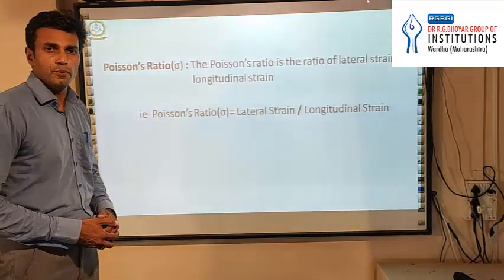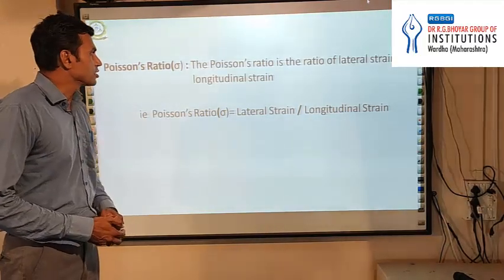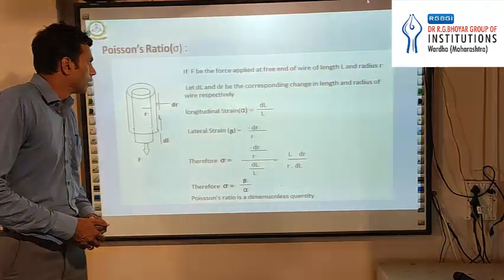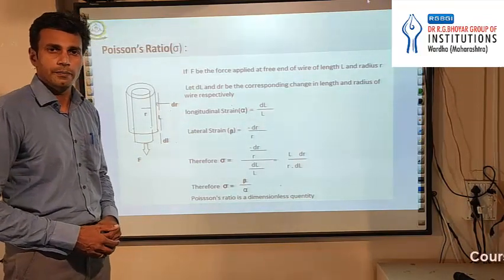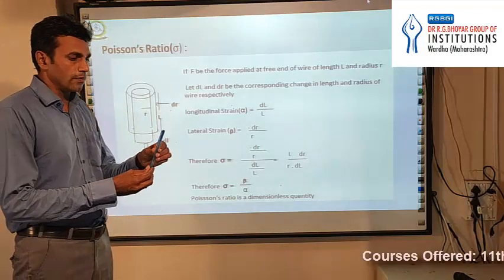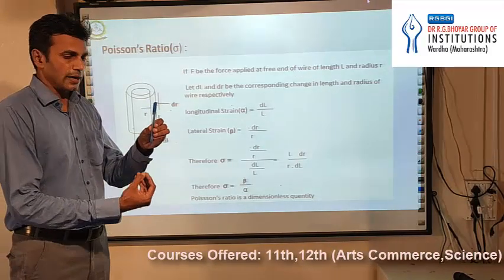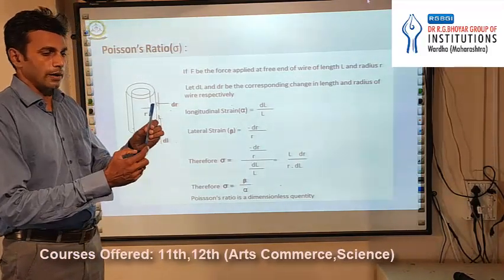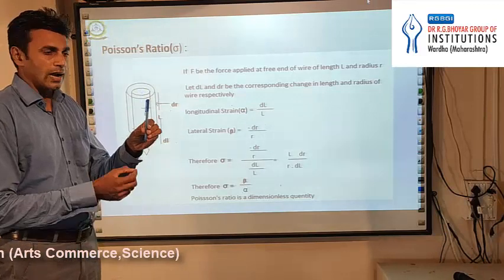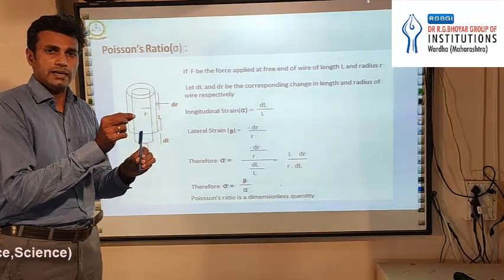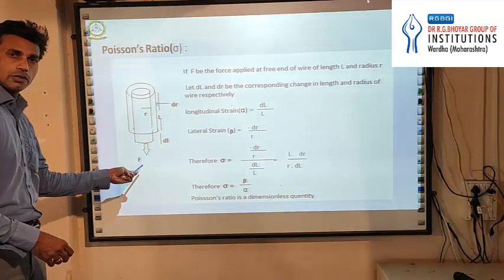Now we are going to discuss about the Poisson ratio. The Poisson ratio is the ratio of lateral strain to longitudinal strain. To understand this topic we will consider one cylindrical wire. We apply the force in a downward direction on this wire, and what will happen is the original length of the wire will change and the wire will get elongated.